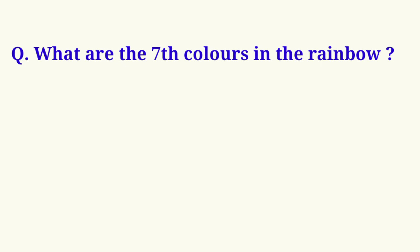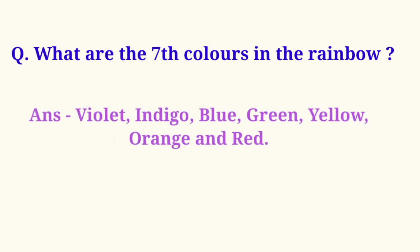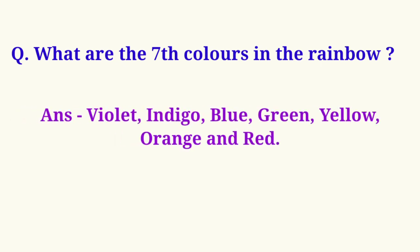What are the seven colours in a rainbow? The answer is: violet, indigo, blue, green, yellow, orange, and red.